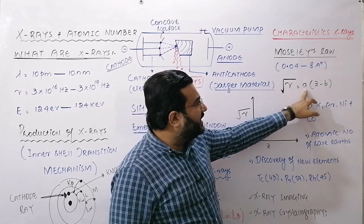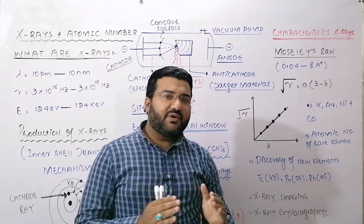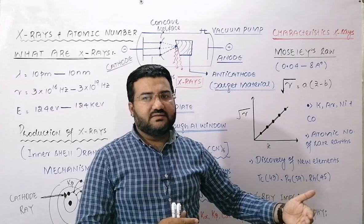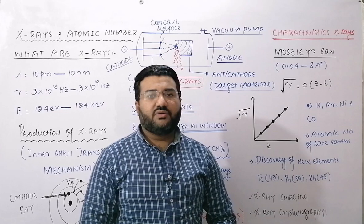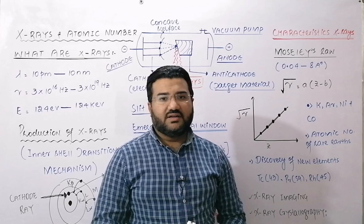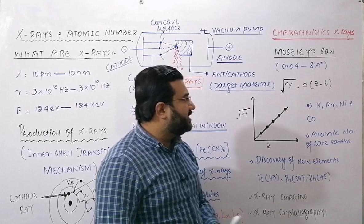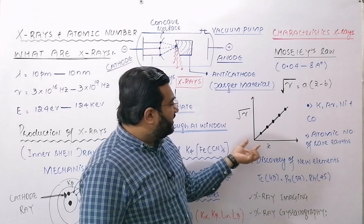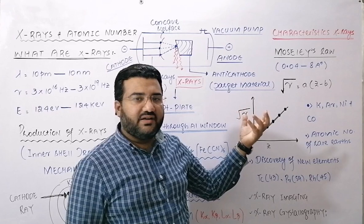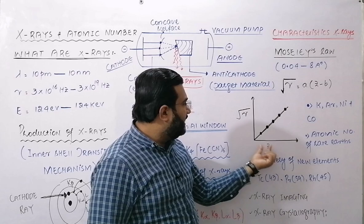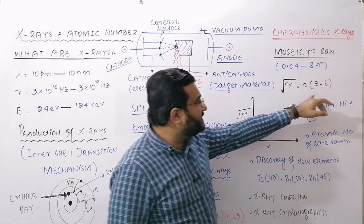In Moseley's law, μ is the frequency, A is the proportionality constant, and B is the screening constant. The screening constant depends on the spectral line being studied — for K-alpha, B has its own value; for K-beta, B is different. When a graph is drawn between atomic number and the square root of frequency for the K-series, a straight line is obtained.